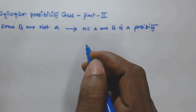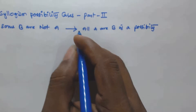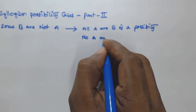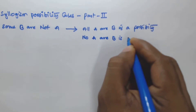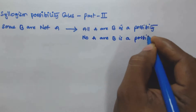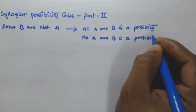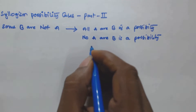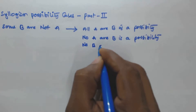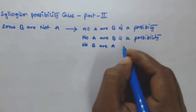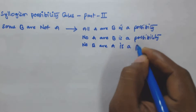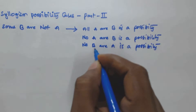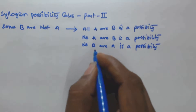The second possibility we can derive is 'no a r b' is a possibility. And then 'no b r a' is a possibility — that is the reverse of 'no a r b'.